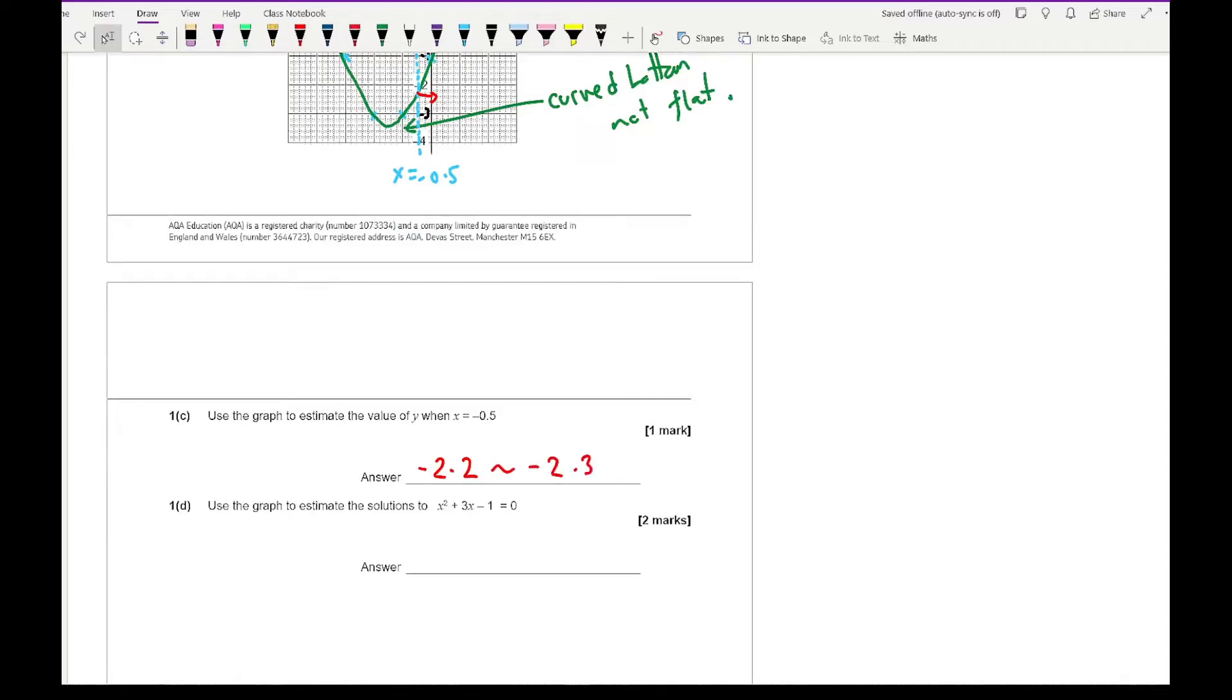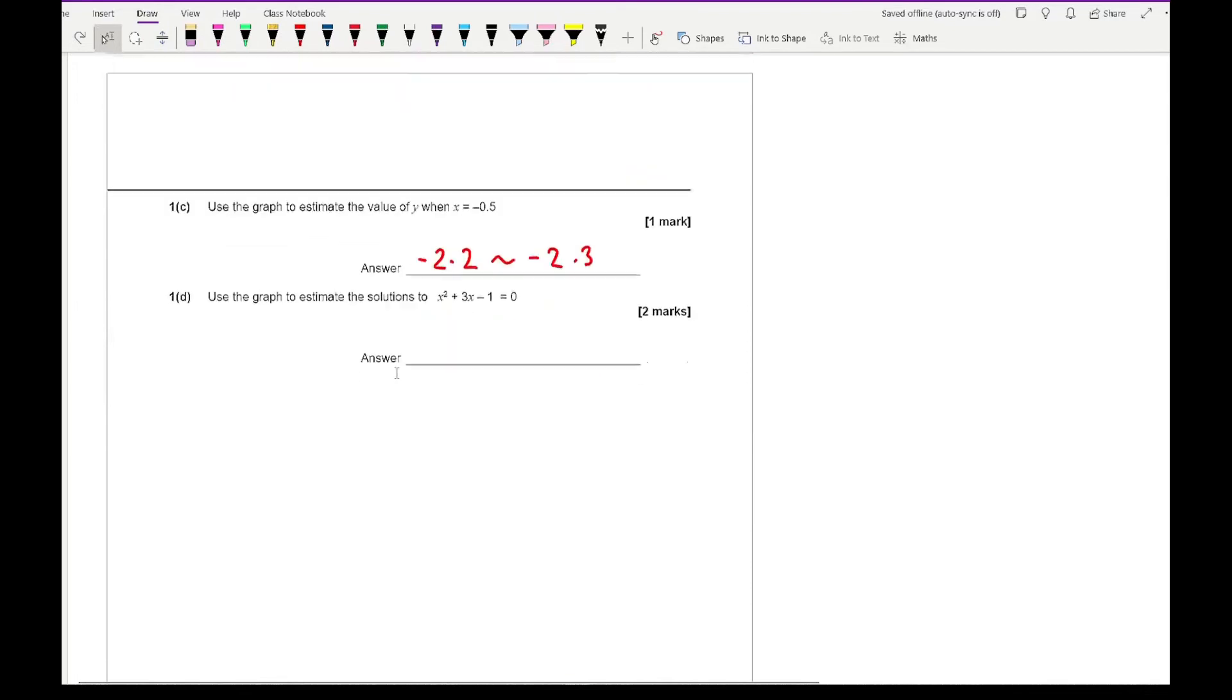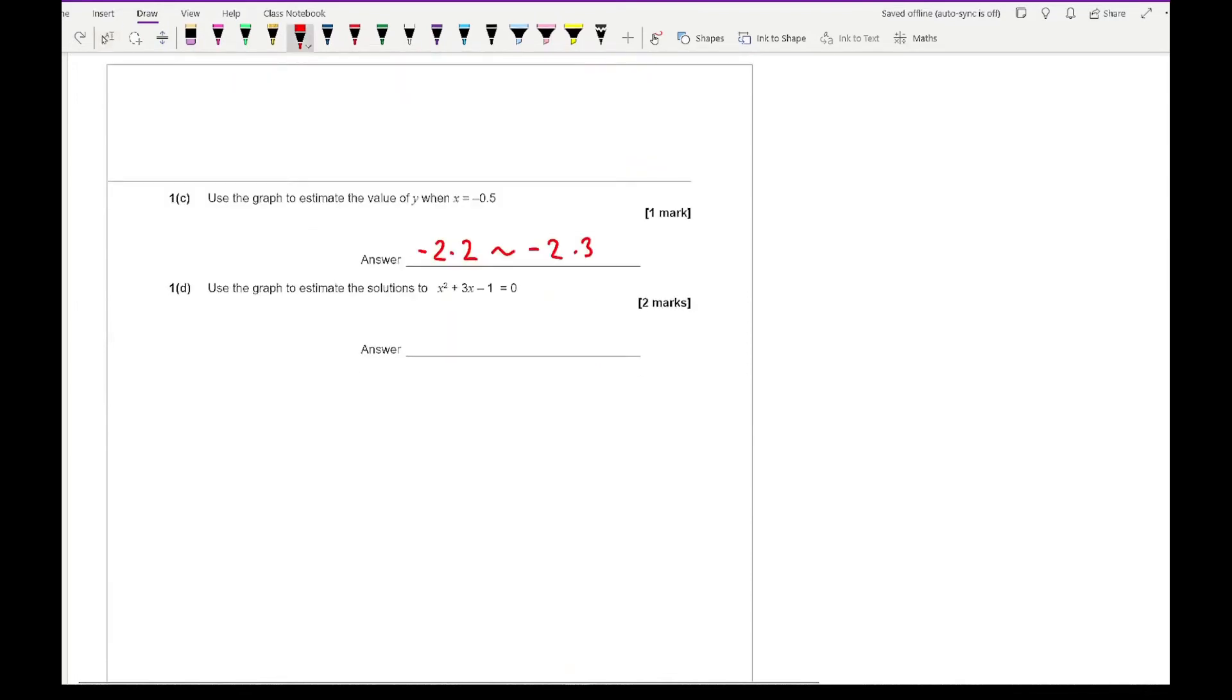The next one then says use the graph to estimate the solutions. For the solutions you're looking for the roots. So you're trying to write down whatever these coordinates are. Mine isn't great in terms of my diagram but yours should be a lot more accurately drawn in which your solutions, well one of them should be between 0.3 and 0.6. And the other coordinate should be a number that's between minus 3.5 and minus 3.1. So any of those numbers within those ranges would be good enough to get you the two marks.